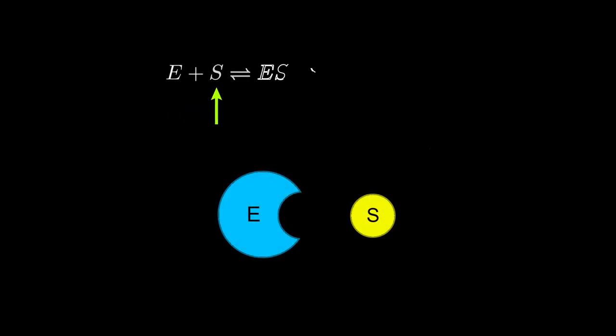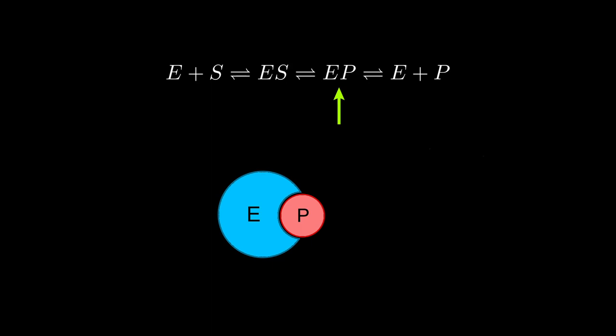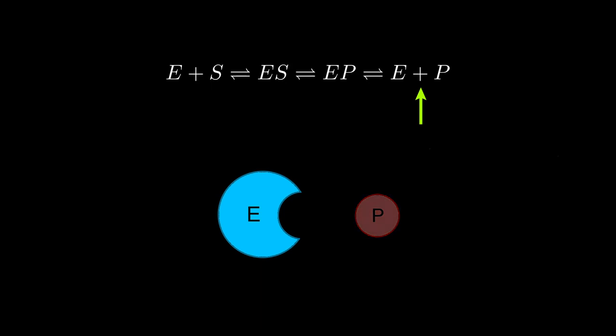Suppose we have an enzyme E, which binds to substrate S, forming an enzyme-substrate complex ES. The enzyme then catalyzes the substrate into the product, forming an enzyme-product complex EP, which dissociates back to E and P. The product then goes to fulfill its purpose, while the enzyme can be recycled to catalyze other substrates.